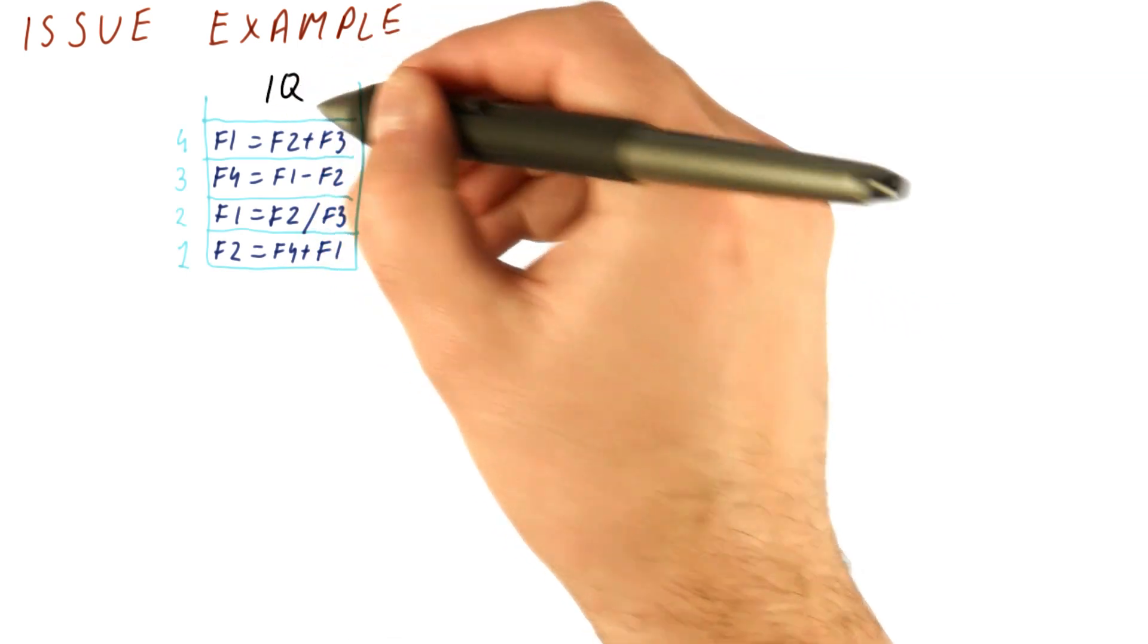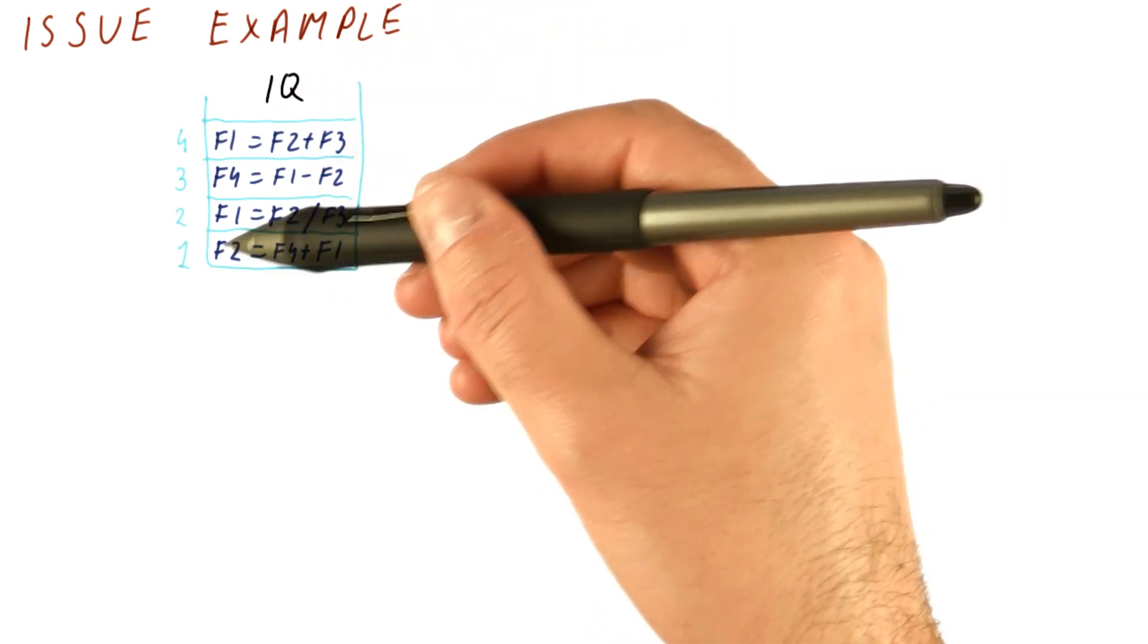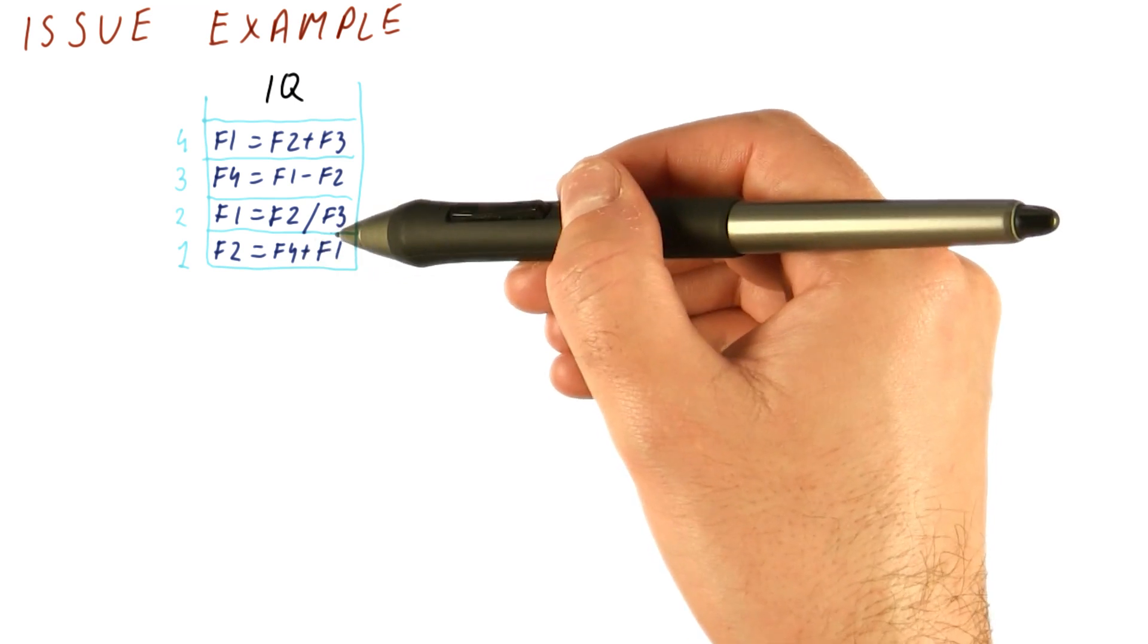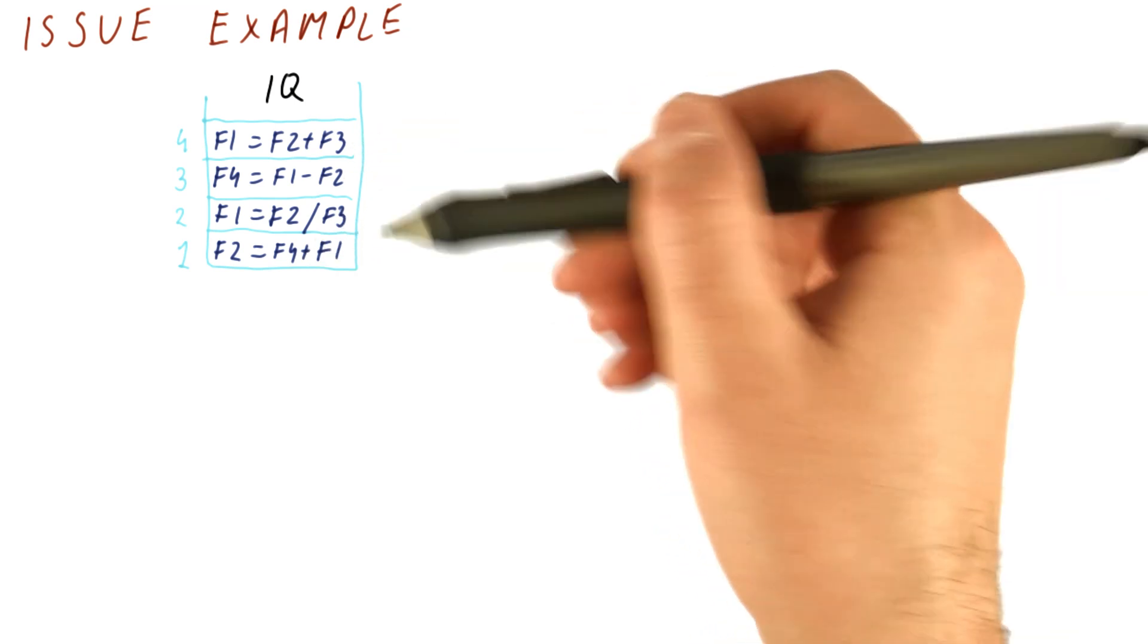So this is an example of how the issue is working. First, this is going to be our issue queue. I'm showing four instructions here. This is the first instruction, this is the second one, third one, and so on.